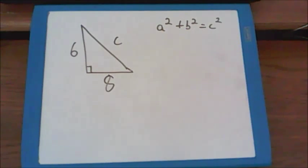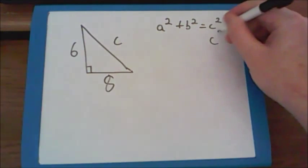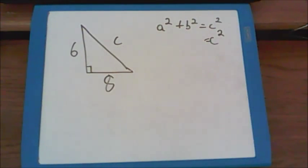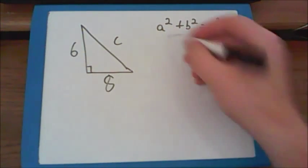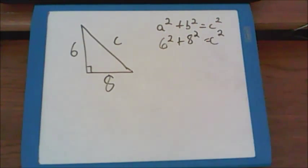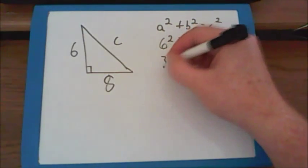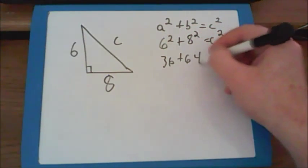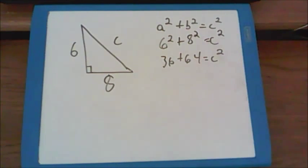On this triangle, we're still looking for c, so we have to leave the c squared alone. But we know what a and b are. Six goes in for the a, and eight goes in for the b. Now we square our numbers. Six squared is thirty-six. Eight squared is sixty-four. And that all still equals c squared.